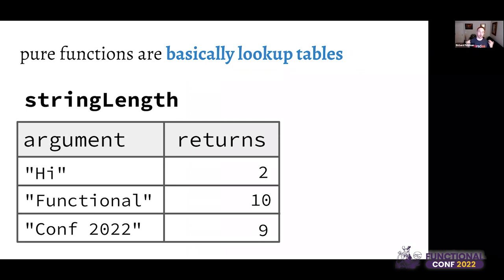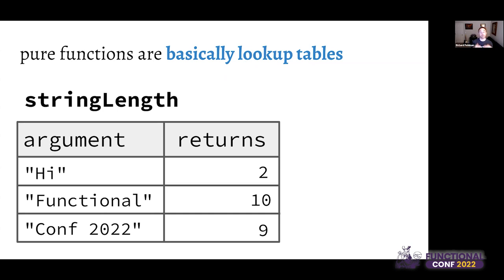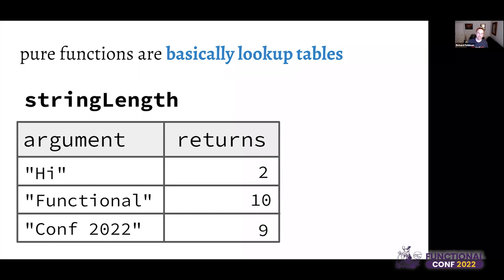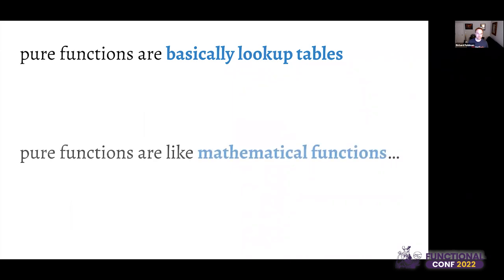My favorite analogy for pure functions is that they're basically lookup tables. For example, a string-length function: pass 'hi' get 2, pass 'functional' get 10, pass 'conf2022' get 9. Any pure function could, in theory with unlimited resources, replace its entire implementation with a gigantic lookup table. If you can't do that, you don't have a pure function. Mathematical functions work the same way — no side effects, and given the same arguments they always return the same value.